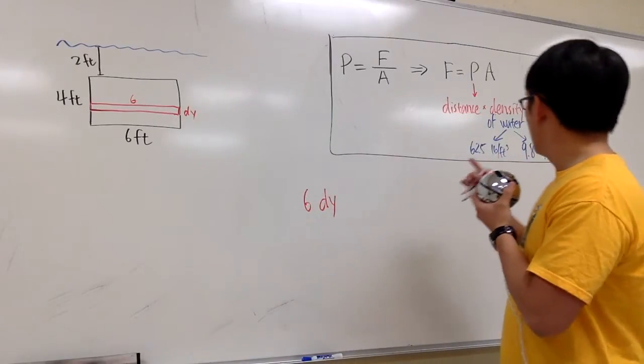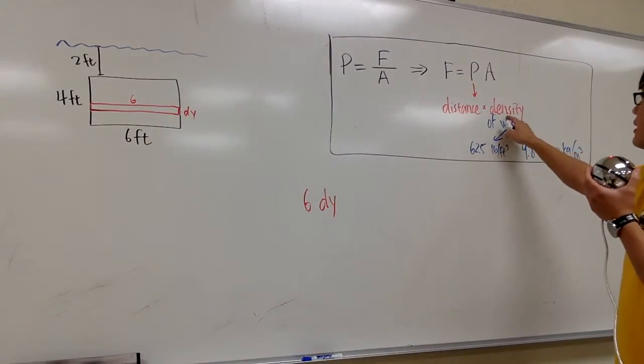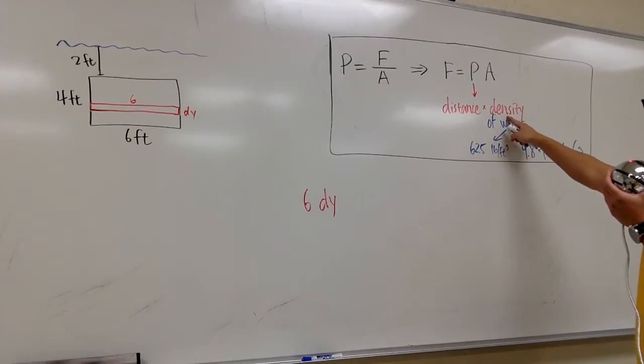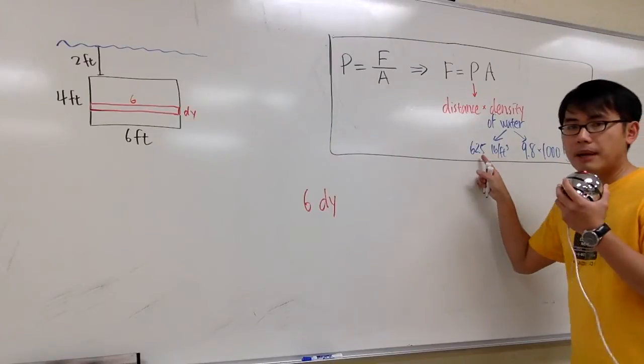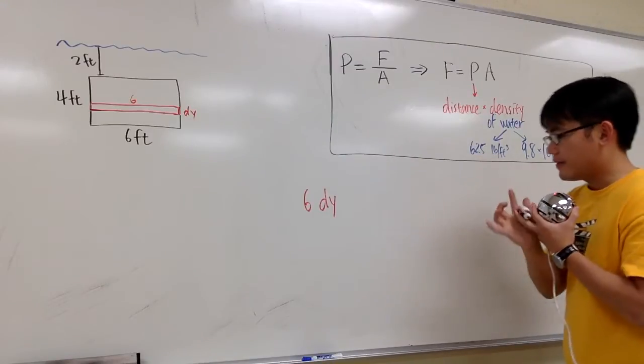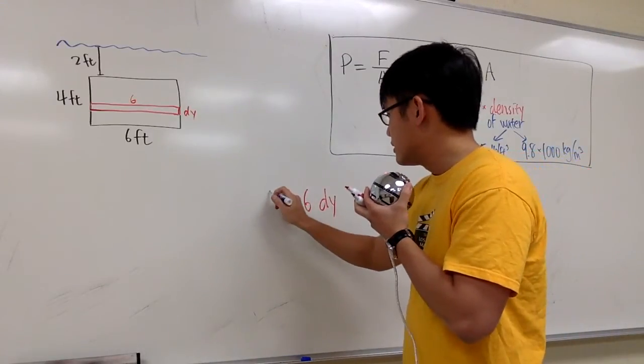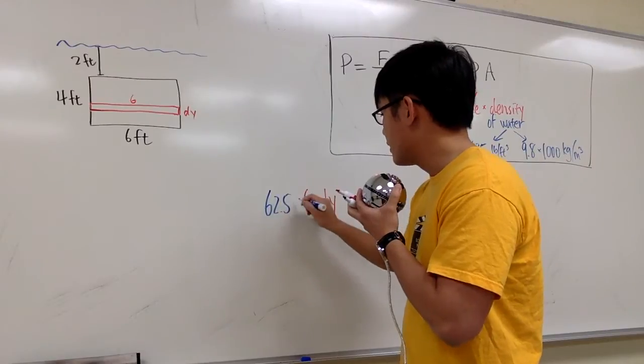And then we will also, let's look at the density first. Let's also multiply by the density. And here we are using feet, so I just need to multiply by 62.5. So let's do that. 62.5. Okay?